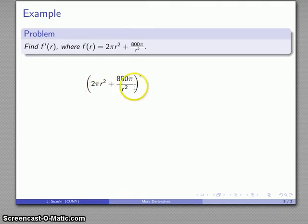The last thing I do is I add, so this is the derivative of a sum and I know that the derivative of a sum I can find by finding the sum of the derivatives. And again this 800 pi over r squared can also be rewritten 800 pi times r to power negative 2. Now let's see what we have.